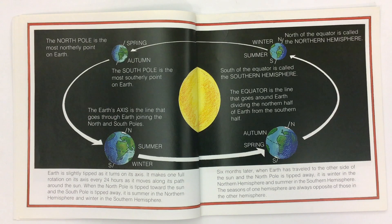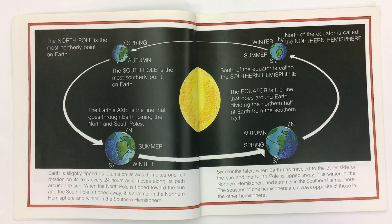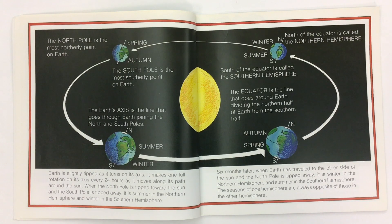The North Pole is the most northerly point on Earth, and the South Pole is the most southerly point on Earth. The Earth's axis is the line that goes through Earth joining the North and South Poles. North of the equator is called the Northern Hemisphere. South of the equator is called the Southern Hemisphere. The equator is the line that goes around Earth dividing the north half from the south half.